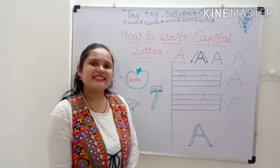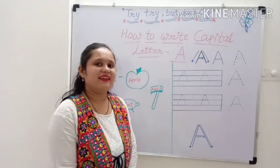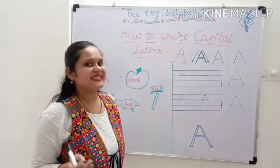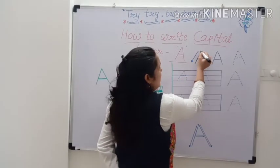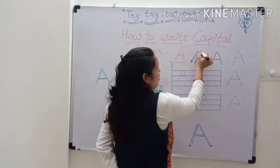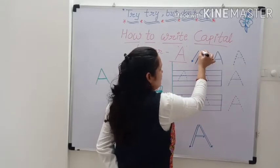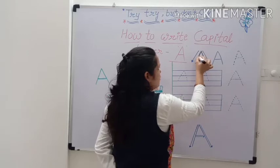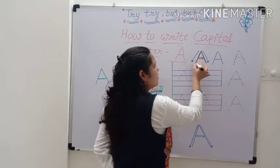Now let's see how to write capital letter A. Let's start. Starts from the top, and draw a slanting line downwards.